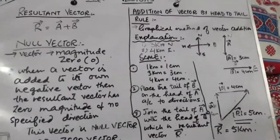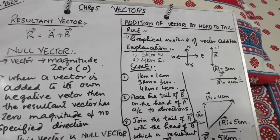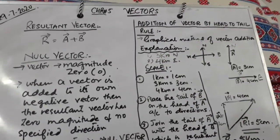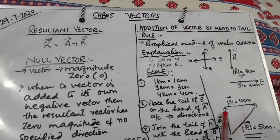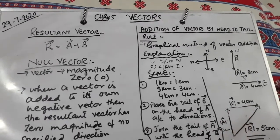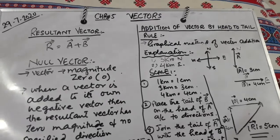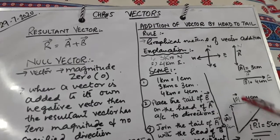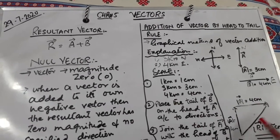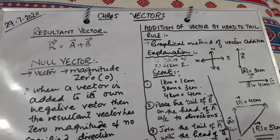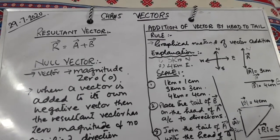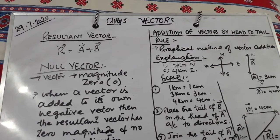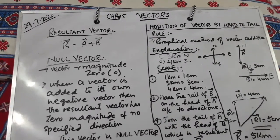To recap: the head to tail rule is a graphical method of vector addition in which two or more vectors are added by placing the tail of the second vector on the head of the first vector. Two or more vectors can be added by drawing vector lines such that the head of one coincides with the tail of the other. The resultant vector is the line joining the tail of the first to the head of the last, and it is always directed from the tail of the first vector to the head of the last vector.